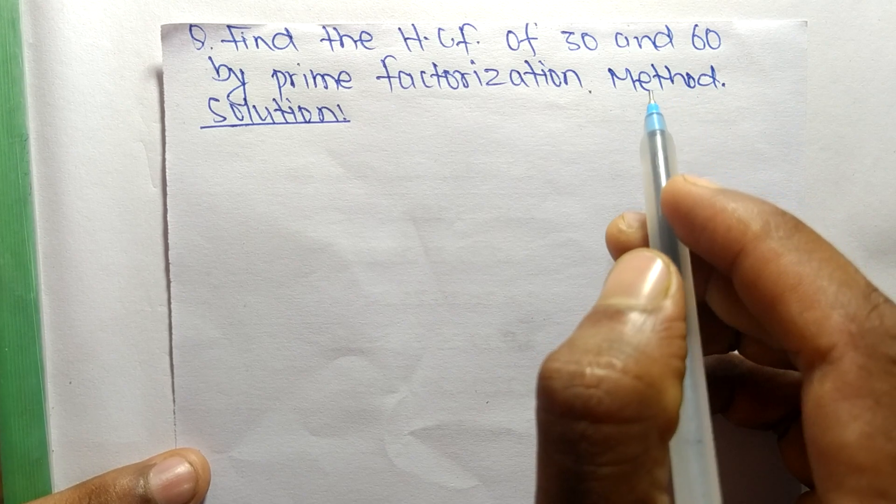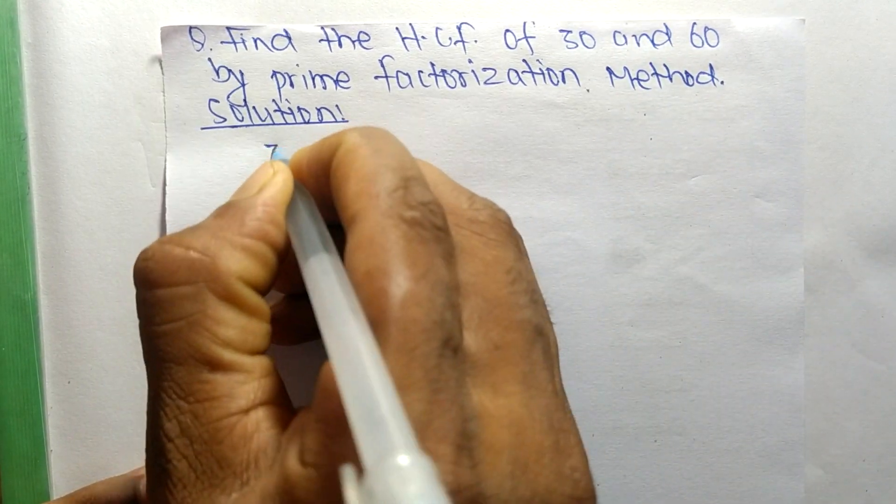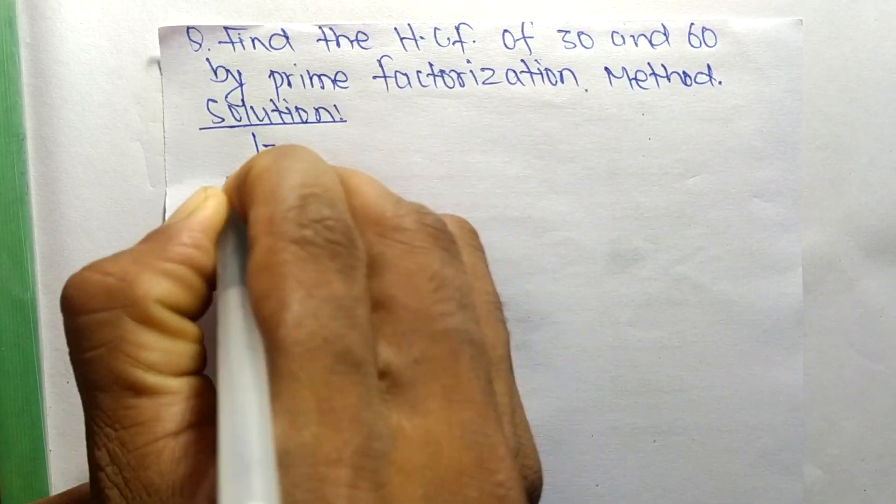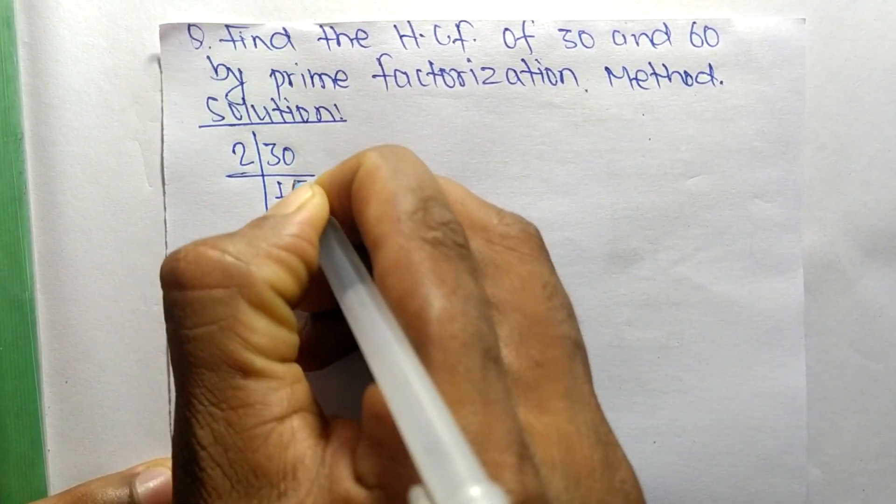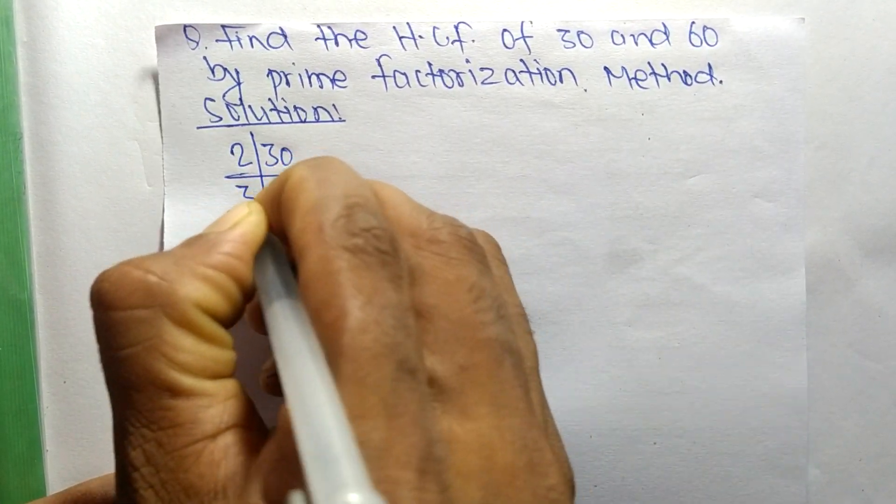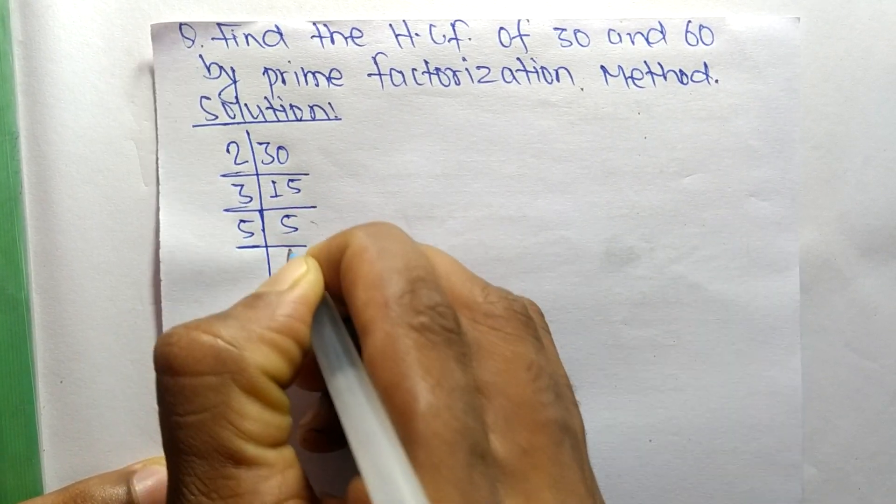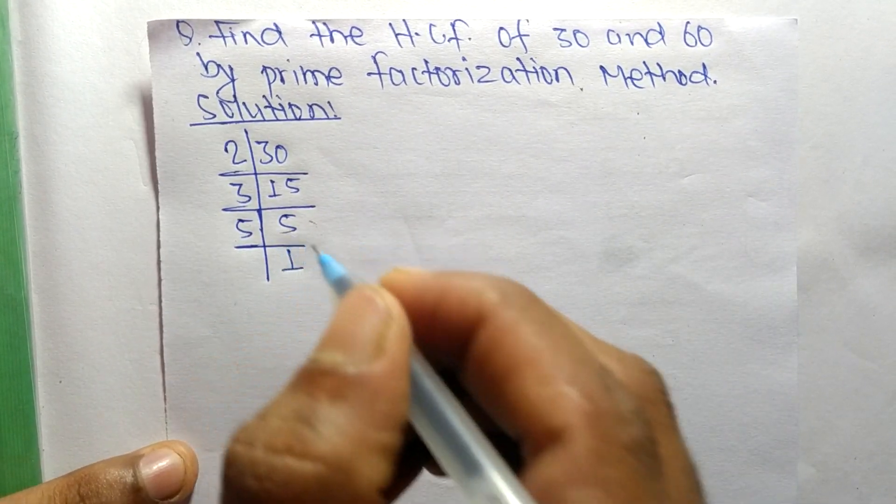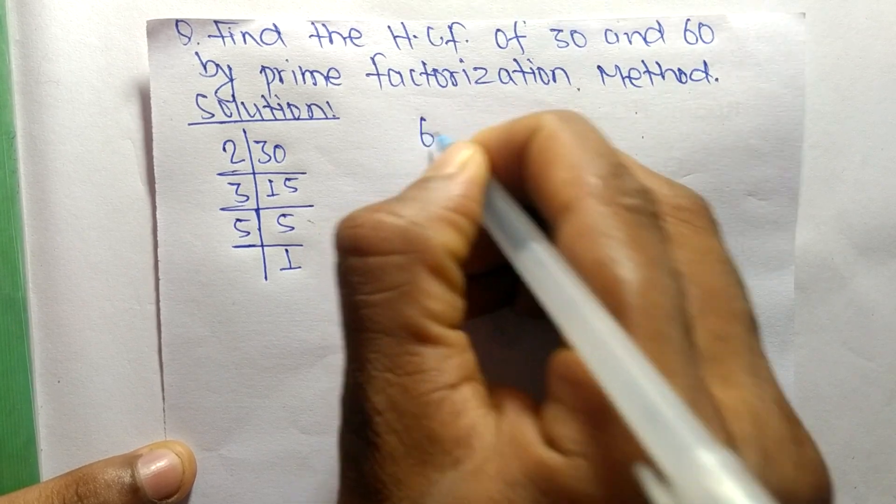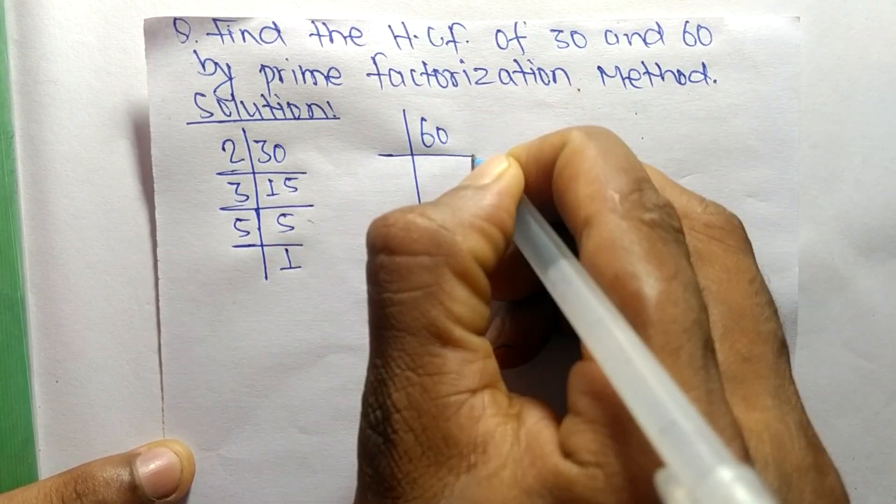So first, we find out the prime factors of 30. So it is 2 times 15 equals 30, 3 times 5 equals 15, and 5 times 1 equals 5.